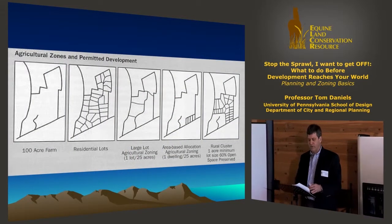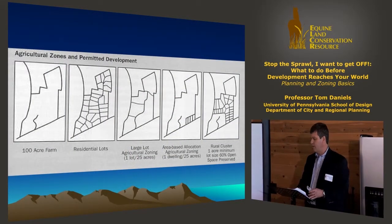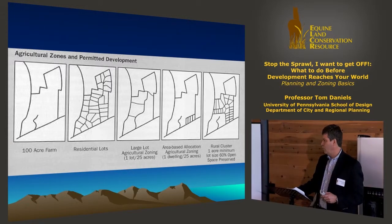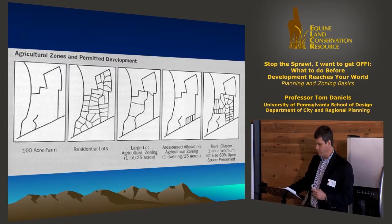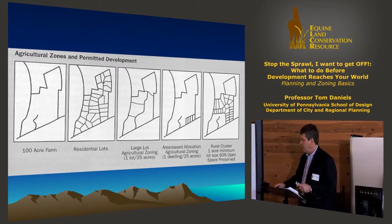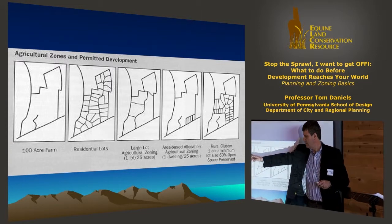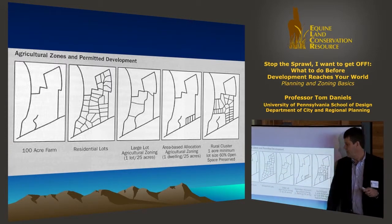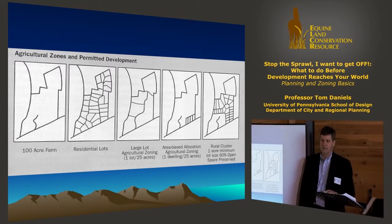Here are some different kinds of agricultural zoning that you can use depending on where you are. Let's say we have a hundred acre farm — if you divided that hundred acres into five acre lots, you could put in twenty five acre lots.